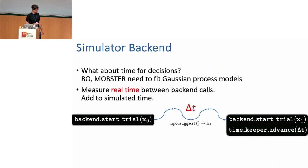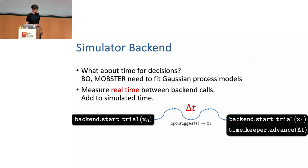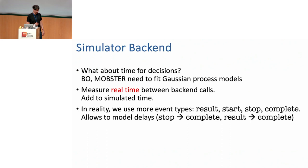The reality is a little more complicated: we use more event types beyond 'result' — also 'start', 'stop', and 'complete' events — to allow for model delays. For example, there might be delays between asking to stop something and it really completing, or between the last result being reported and completion. These delays can be simulated, even with random variables that simulate stochasticity in this backend.